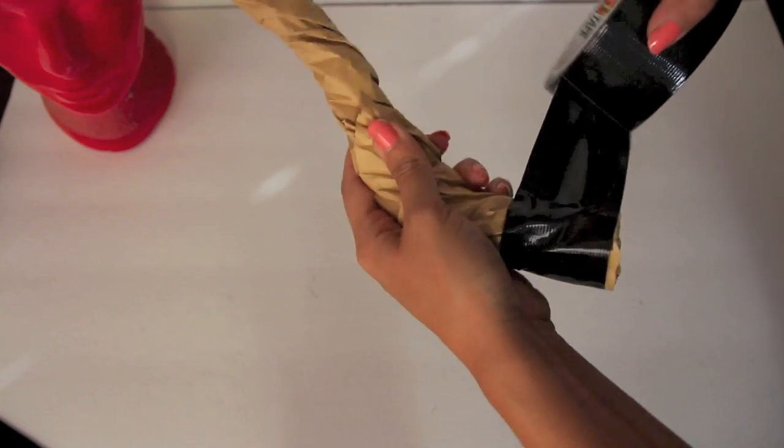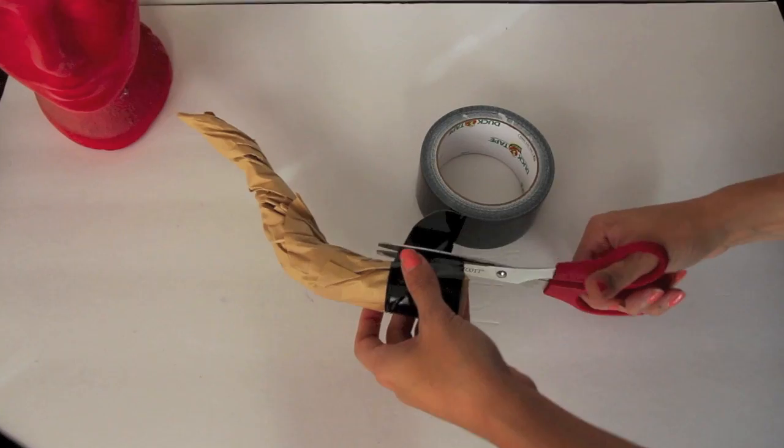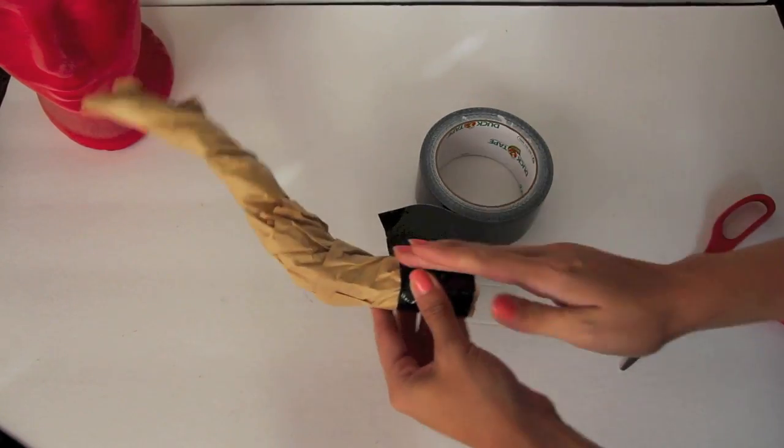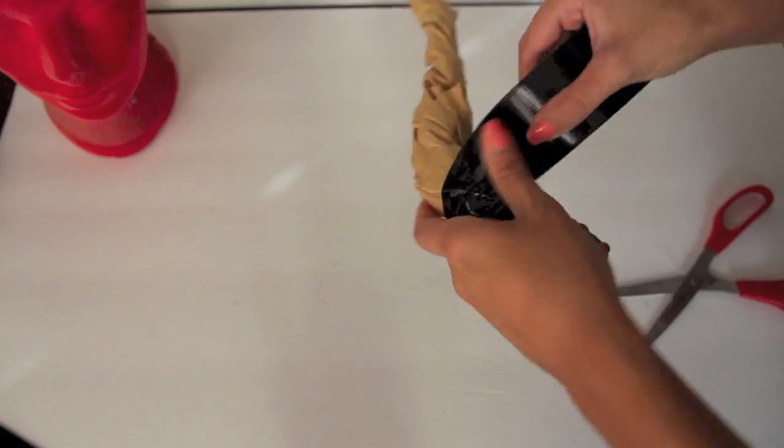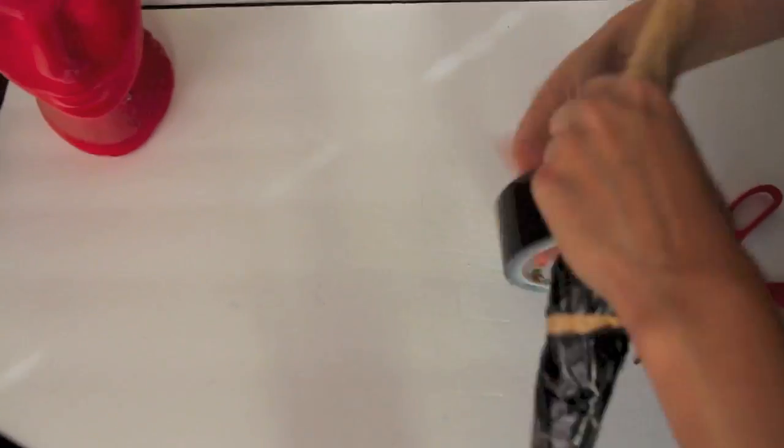I'm going to start off by actually putting a piece at the base to kind of hold everything together, and then I'm going to continue on by actually wrapping my horns all the way in there until they're completely covered.